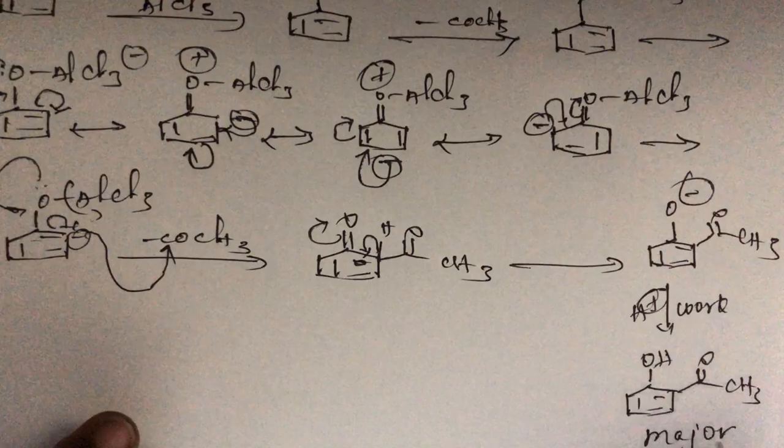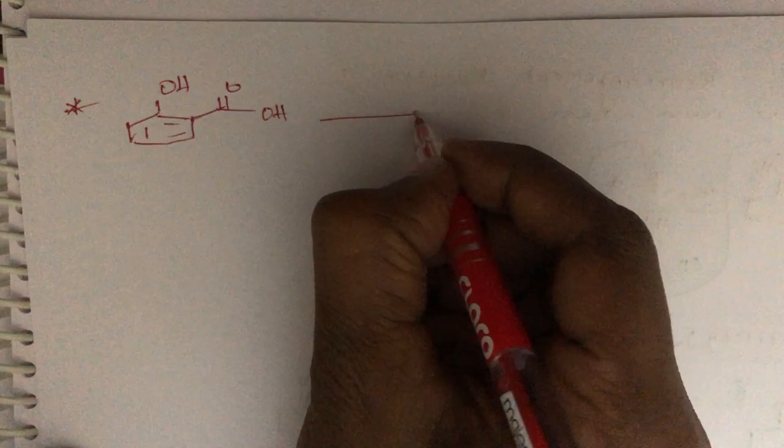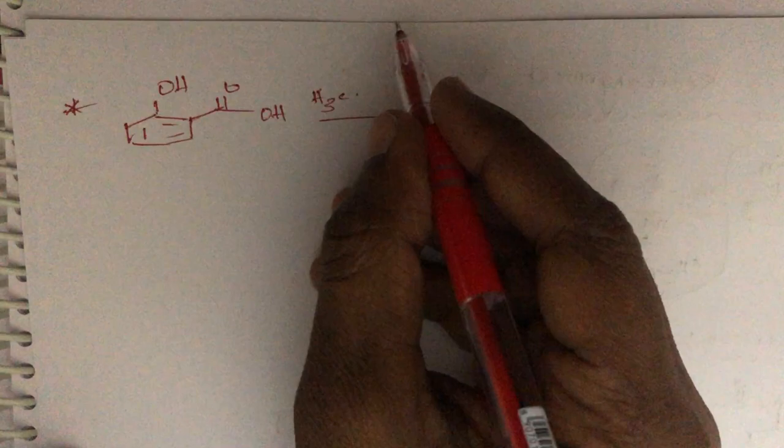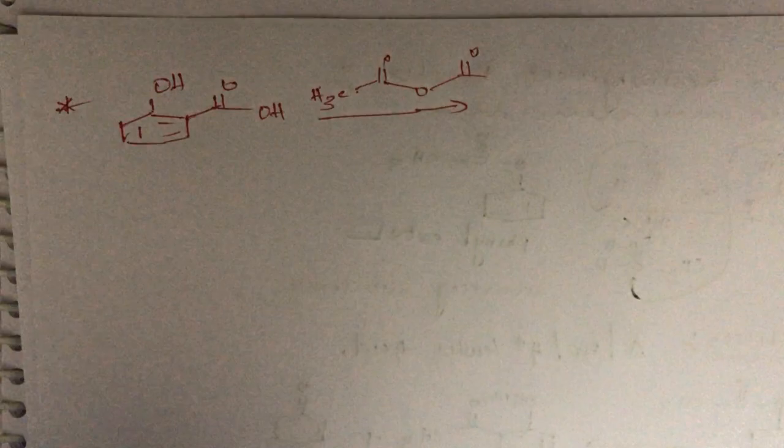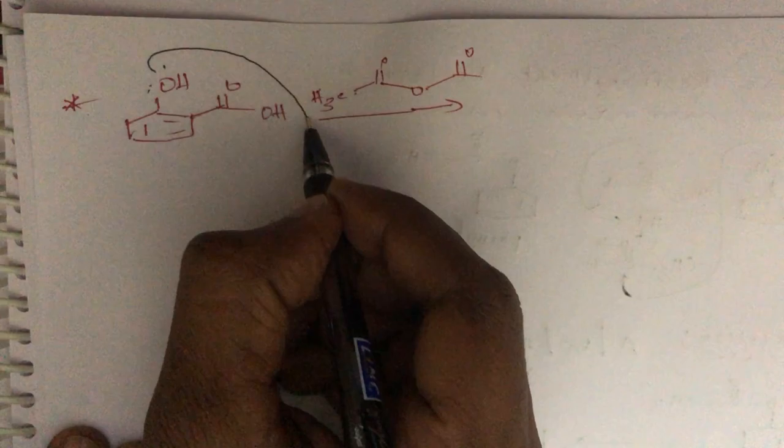Let me give one more example so you can understand this reaction better. In this reaction, we have a phenol (C double bond O, H) treated with a carbonate ester (C-C double bond O-C double bond O-CH3). The lone pair of electrons attacks this center, this bond migrates here, this bond migrates backward, and this bond will leave.